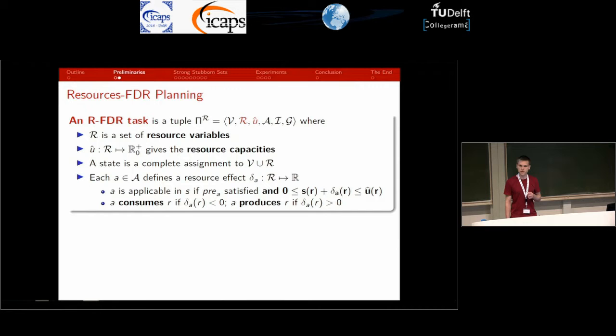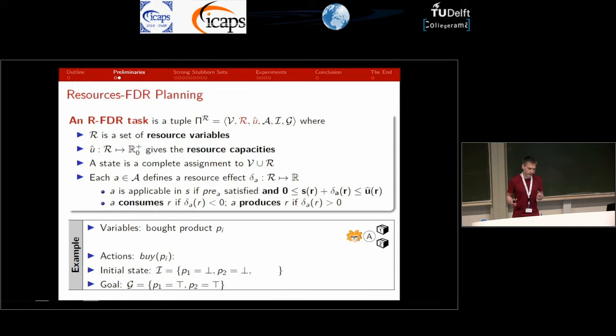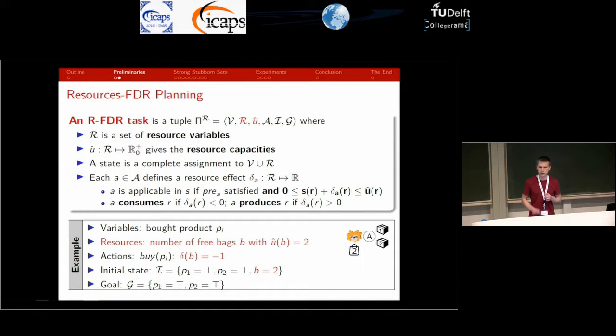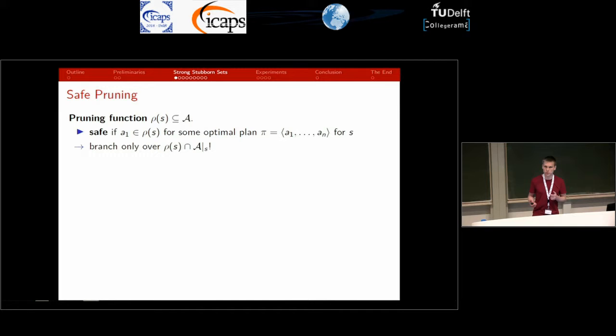We will often distinguish between two types of resource effects. We say that an action consumes a resource if the corresponding resource effect is negative, and an action produces a resource if it is positive. Back in the example, to make it slightly more interesting, we limit the maximum number of products that can be carried at any point in time. We introduce resource variable B with initial state value and resource capacity of two, and change the buy action so that each one consumes one unit of this resource. Obviously the plans are still given by applying both buy actions in any order.